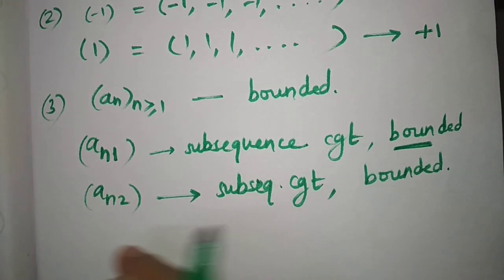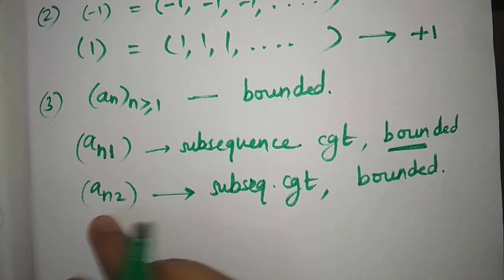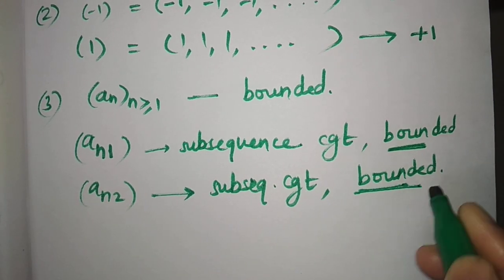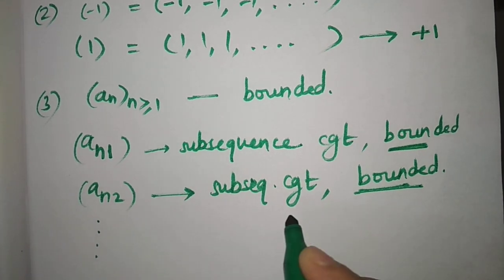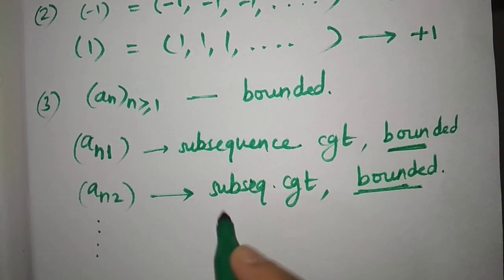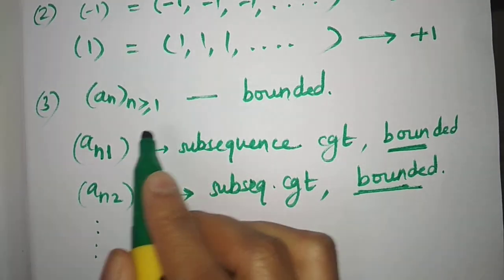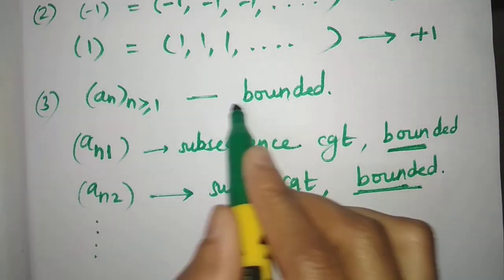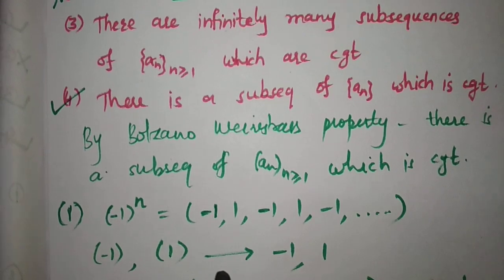You again apply the Bolzano-Weierstrass property to a_{n_2}: since it is bounded, it has a convergent subsequence, and so on. This process yields infinitely many convergent subsequences of the original bounded sequence a_n. Therefore the third option is also correct.